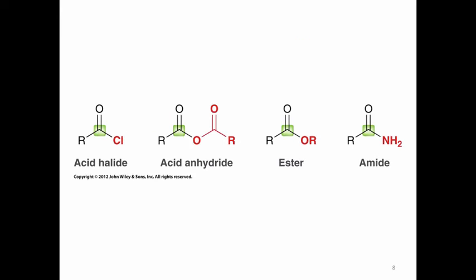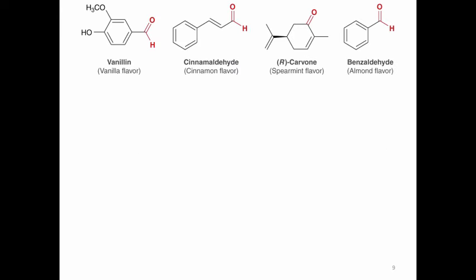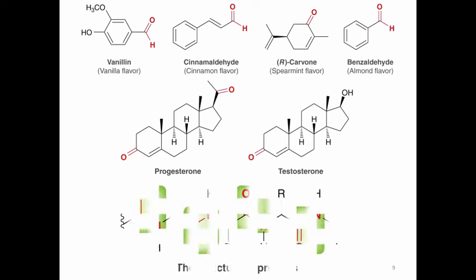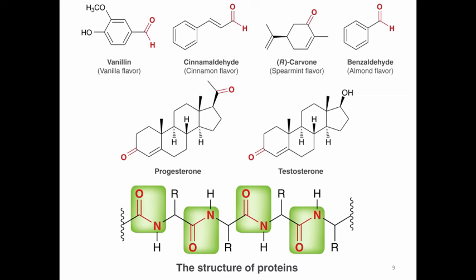In the second-year organic course, we'll also look at carbonyl groups as part of acid chlorides, acid anhydrides, esters, and amides. Aldehydes, ketones, and other carbonyl groups acting as electrophiles are found in a number of different compounds — for example, vanillin, cinnamaldehyde, carvone, and benzaldehyde. We also find electrophilic carbonyl species in steroids, such as progesterone and testosterone. And there are electrophilic carbonyl groups in proteins — proteins have a repeating amide subunit with R-group substituents, and the amide carbon is electrophilic.